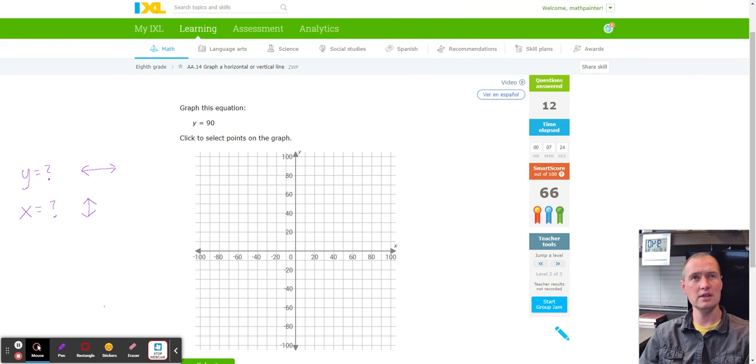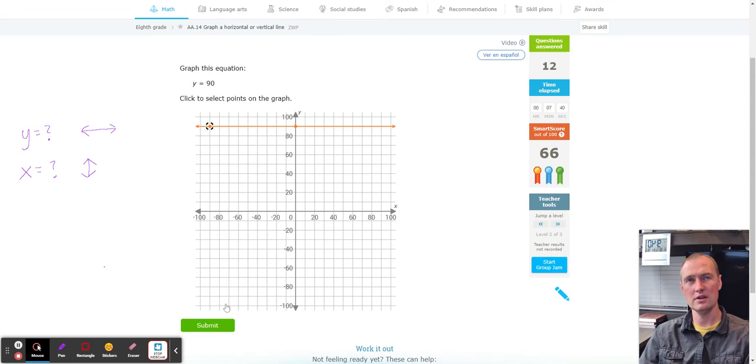Y equals 90. So this is a vertical. So I'm going to go on the Y, 10, 20, 30, 40, 50, 60, 70, 80, 90. So I'm being more careful now because I got a little bit too fast on the last one. So Y equals 90 right there. So it is horizontal, just like my notes right here.